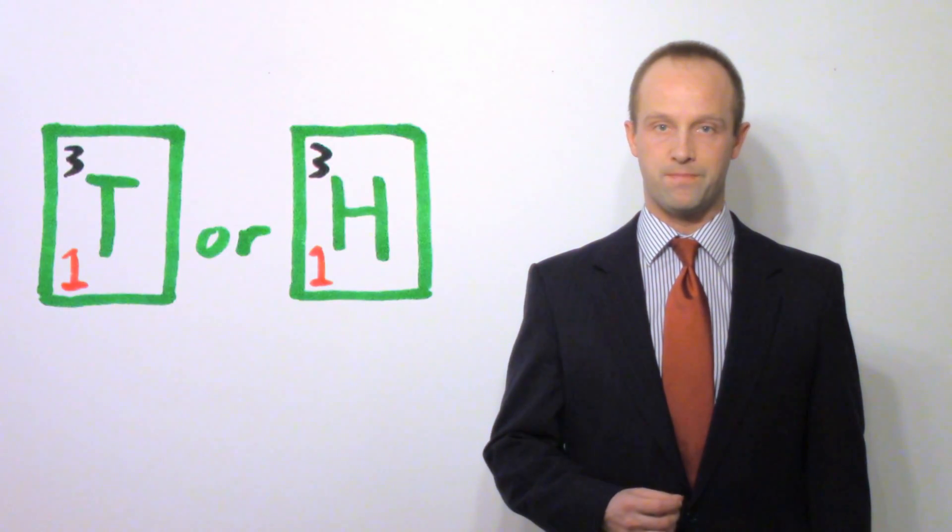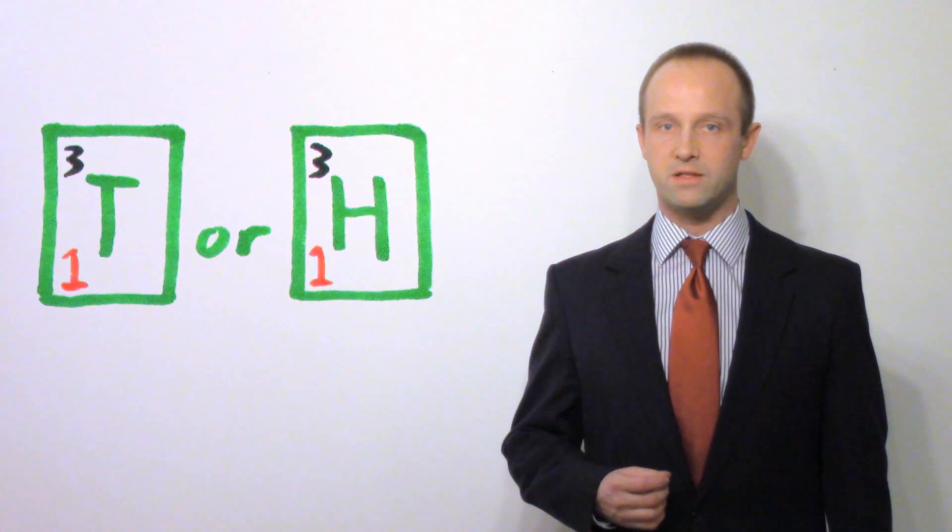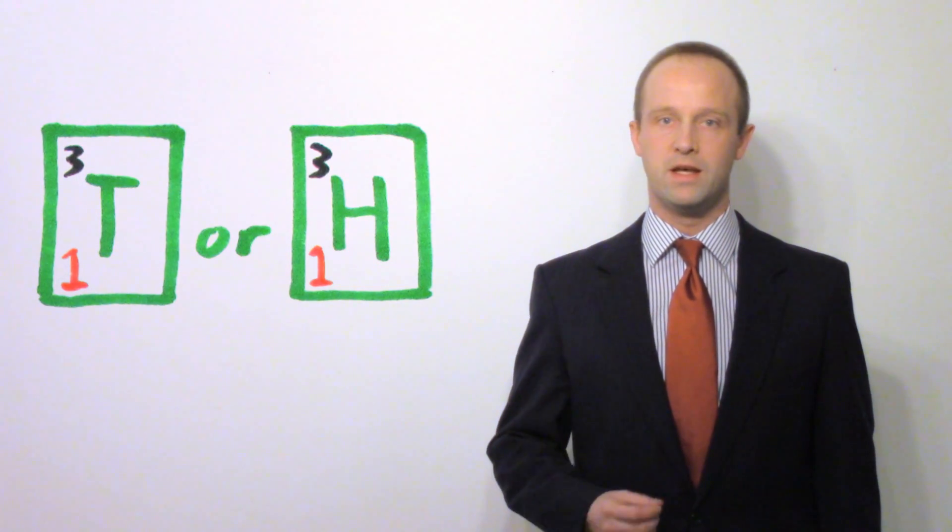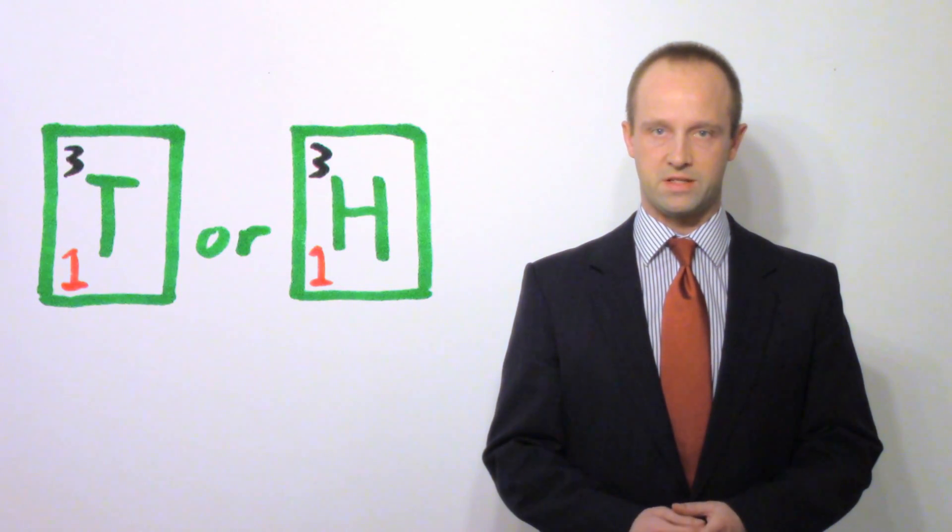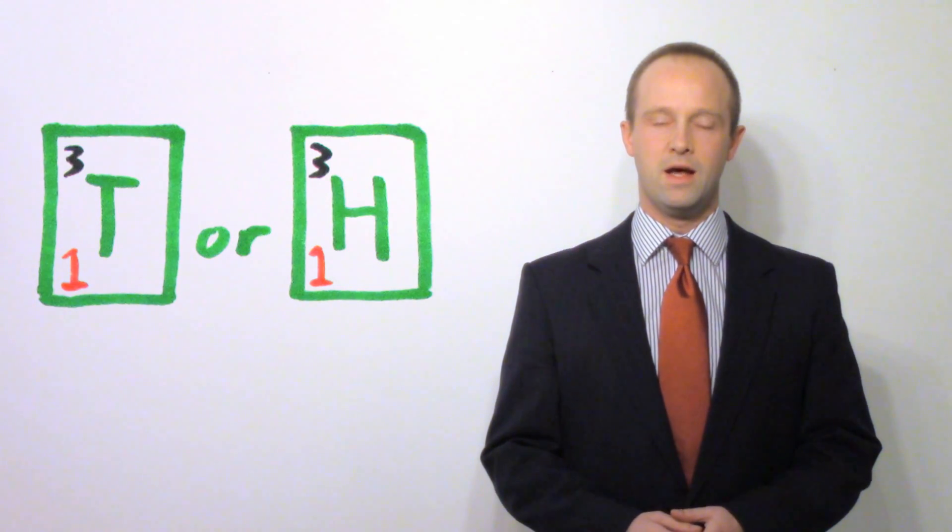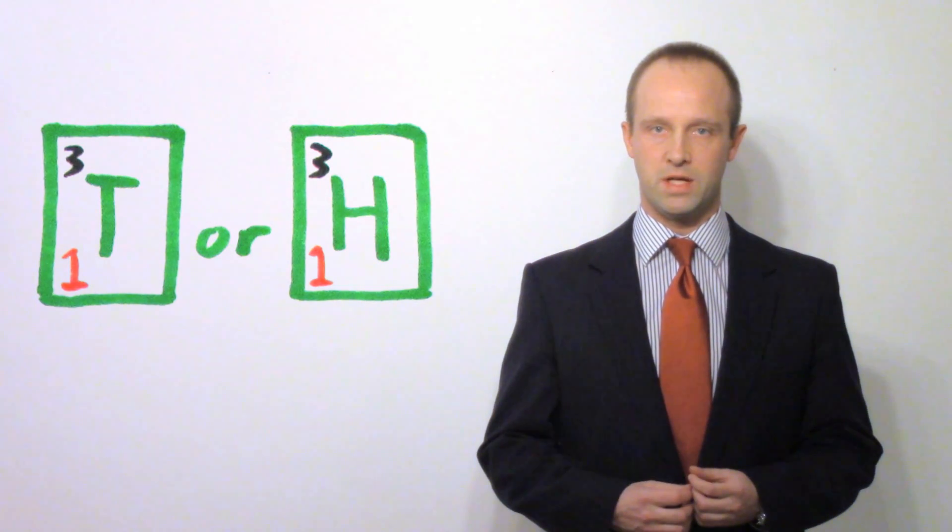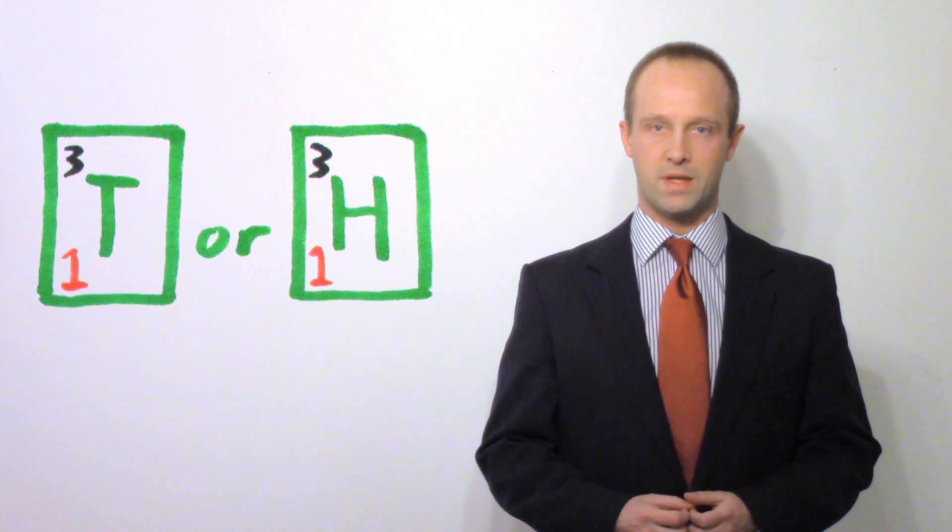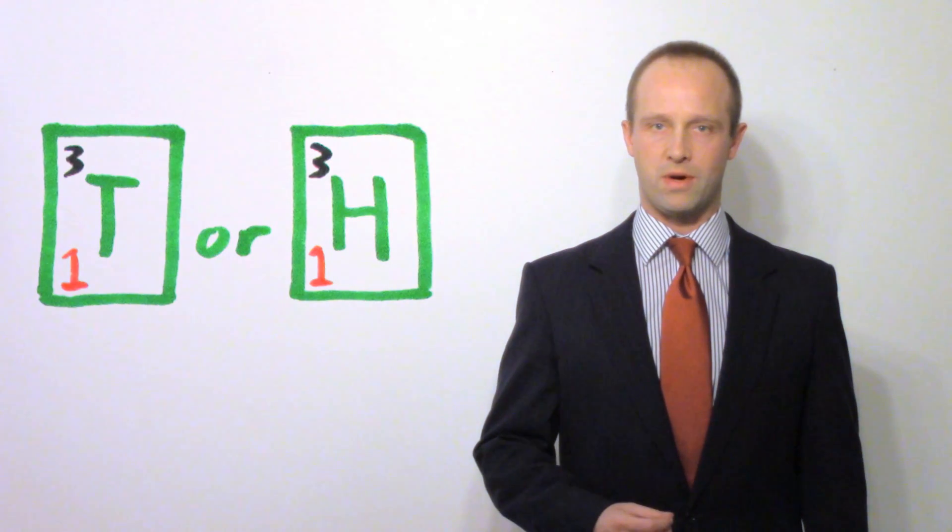There's an even rarer isotope of hydrogen known as tritium, and that has a mass number of three. And so we get two neutrons in its nucleus in addition to the one proton. Chemically, they're still exactly the same as hydrogen. They still have one electron in their outer shell and they react in exactly the same way. But in physical terms, those atoms are a little heavier. And often, the more rare isotopes are more rare because they're actually radioactive and will break down radioactively. And we'll consider radiation in a later video.